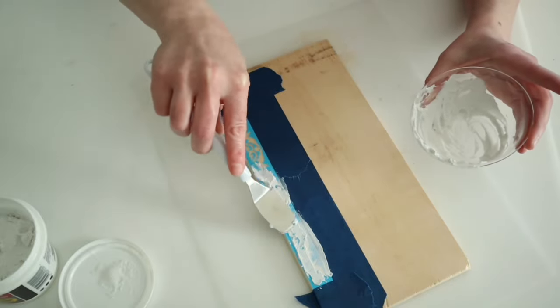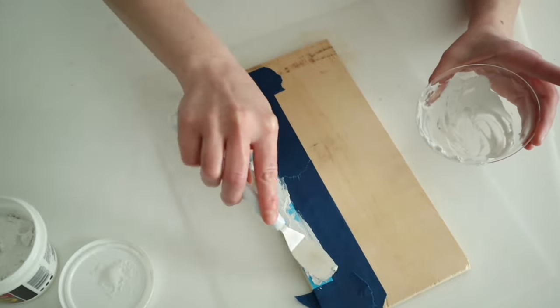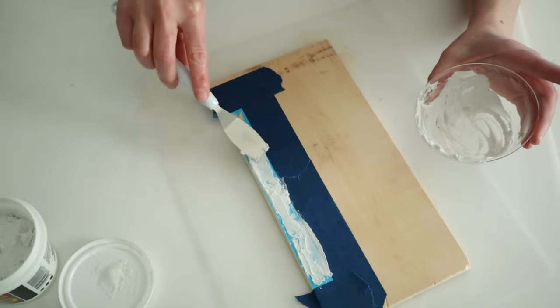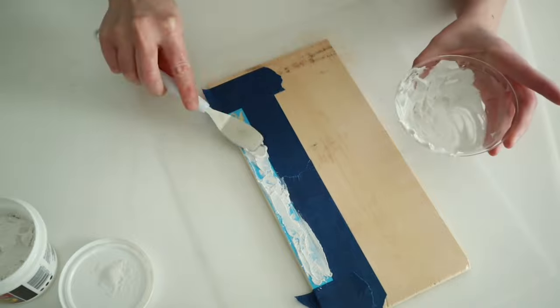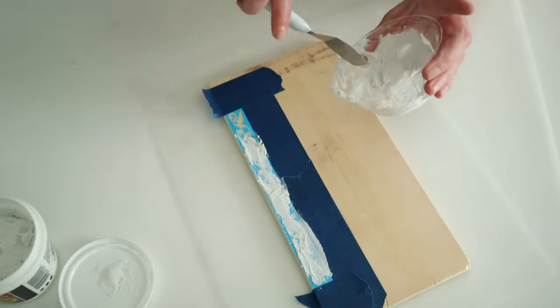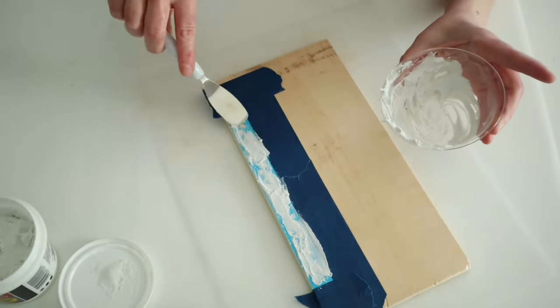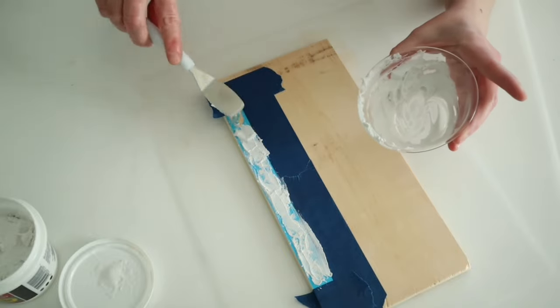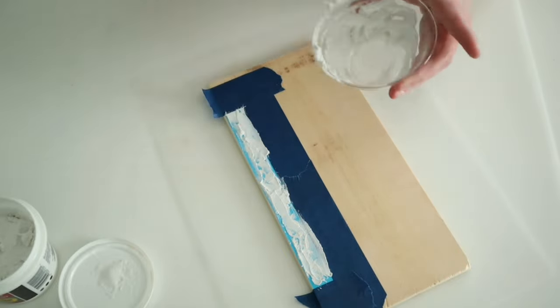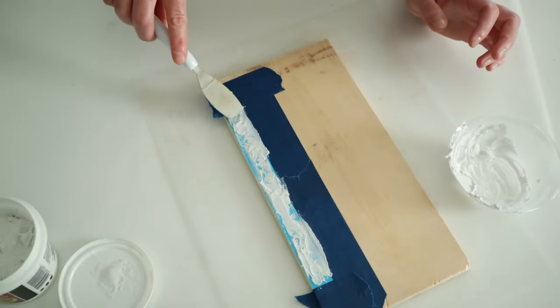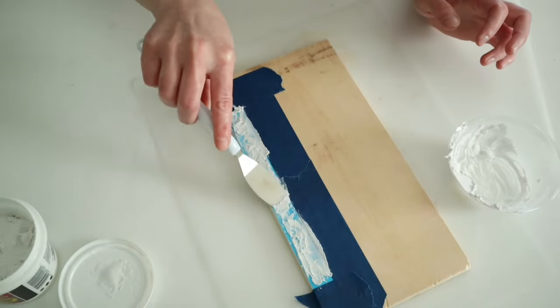So I'm just going to take that Dollar Tree spatula and I'm going to put this over top of my stencil from Dollar Tree and you're just going to cover it. You don't need it to be very thick at all. You just want a light coating over your stencil. And I do recommend using some painter's tape to tape down whatever stencil you want to use.